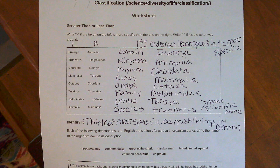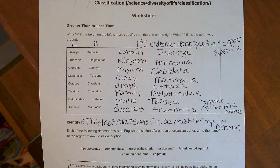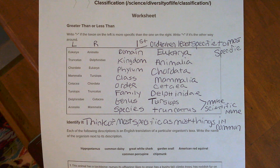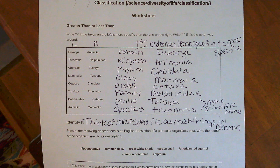Then the dolphin got more specific, and you saw the other four words in the video. Notice when I wrote this, I put a real big capital T. Remember, the scientific name is always genus and species. Genus always goes first and is always capitalized. Species goes last and is not capitalized. So I was very purposeful the way I wrote those T's — keep that in mind. Think of most specific as most things in common; that will help you.